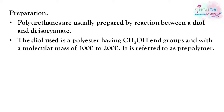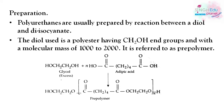The diol is a polyester having CH2OH end-groups with molecular mass of 1000 to 2000, referred to as the pre-polymer. This pre-polymer is made from glycol and adipic acid combined together.